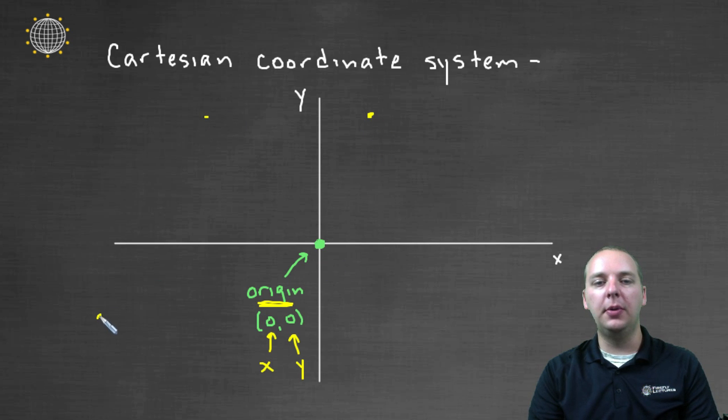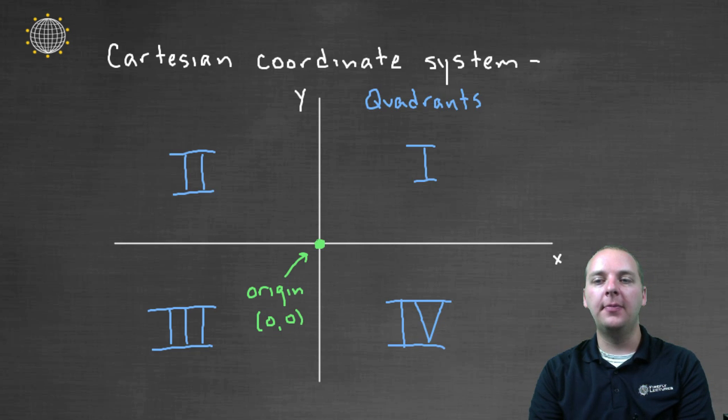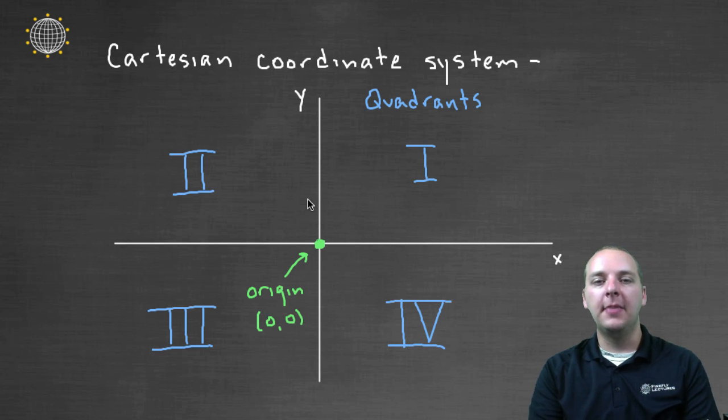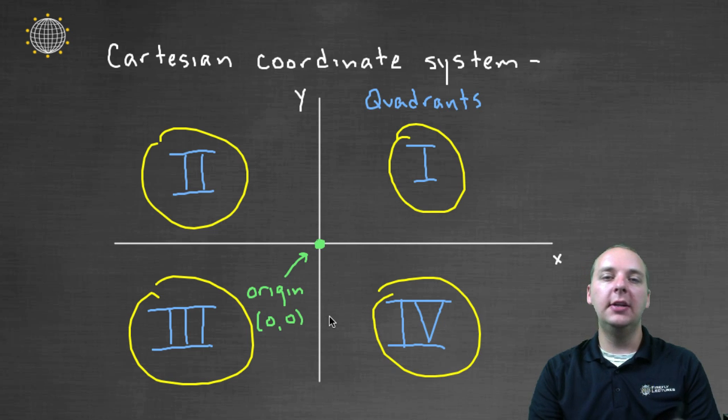Now as you start plotting points all over the place, it can get a little confusing as to referencing where these points are. And so another vocabulary word we have is a quadrant. And the plane is actually broken up into four quadrants. The upper right, the upper left, the bottom left, and the bottom right. And they're numbered in this order. Quadrant one, quadrant two, quadrant three, quadrant four, in a counterclockwise fashion. And so these are great because they just give a rough, intuitive idea of where a point would be.